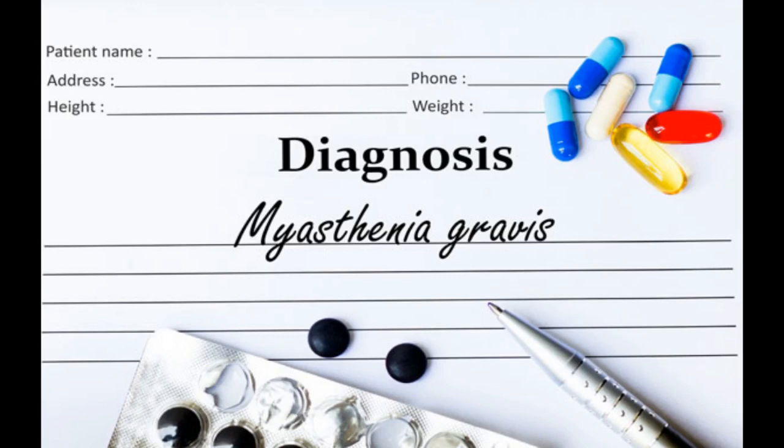Hello everyone, today we will discuss Myasthenia Gravis. What is Myasthenia Gravis? It is an autoimmune disease of the neuromuscular junction which is caused by antibodies to the cholinergic receptors.